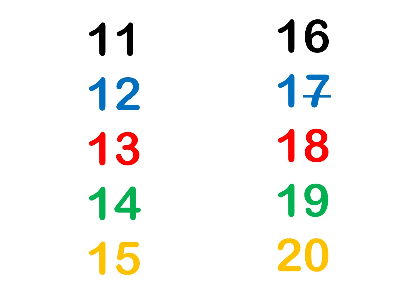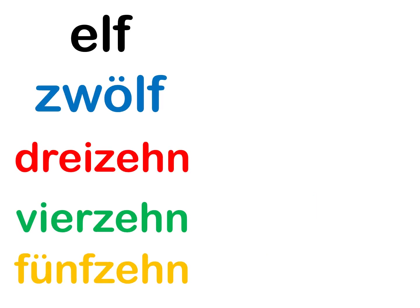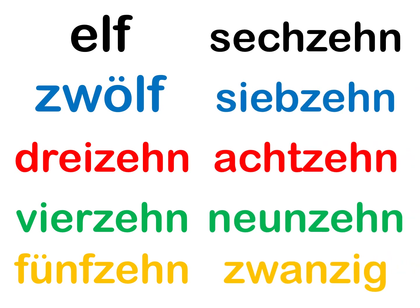We're going to take a look at them all written out. Let's start from here and do them all together. Ready? Begin. Elf, zwölf, dreizehn, vierzehn, fünfzehn, sechzehn, siebzehn, achtzehn, neunzehn, zwanzig. Very good.